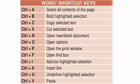CTRL+I. CTRL+I is used for the purpose of making the selected text italic. CTRL+I کو ہم selected text کو italic shape دینے کے لیے استعمال کرتے ہیں۔